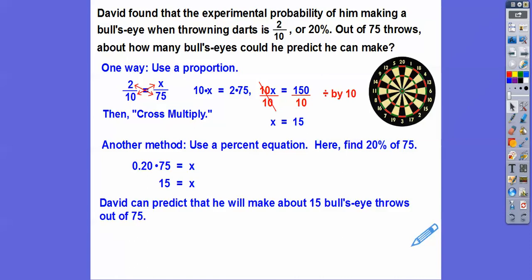So David can predict that he will make about 15 bullseye throws out of 75 tries right there. He might make 13 or 14. He might make 16 or 17. But out of 75, we can say that 15 is a good estimate of how many bullseye throws he would make.